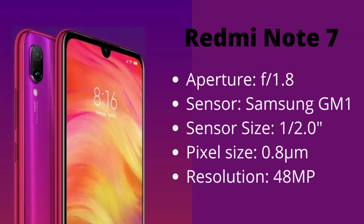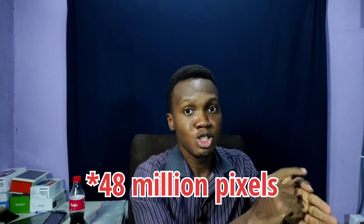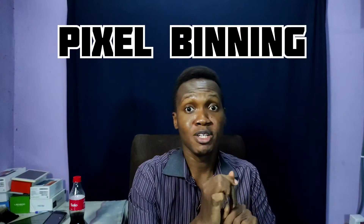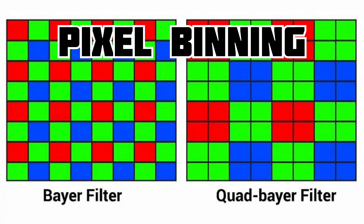That means on the sensor there are 48,000 individual pixels that capture light. These pixels on the Redmi Note 7 are actually very, very small, so not enough light is really going to enter the camera. This is where a technique called pixel binning comes in. Since one pixel by itself is really small, what Samsung did was combine four pixels together to give you the performance of one. So in essence, the 48 megapixel sensor on the Redmi Note 7 actually gives you 12 megapixel photos. That's how pixel binning works.